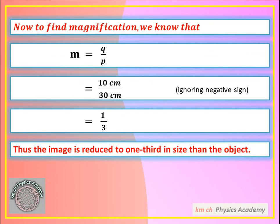Now to find magnification. Magnification is the ratio of the size of the image to the size of the object — M = Q over P. When calculating magnification, we ignore the negative sign. Q is 10 cm and P is 30 cm, so magnification = 10 over 30 = 1/3. This means the image is one-third the size of the object, so the image is smaller than the object.